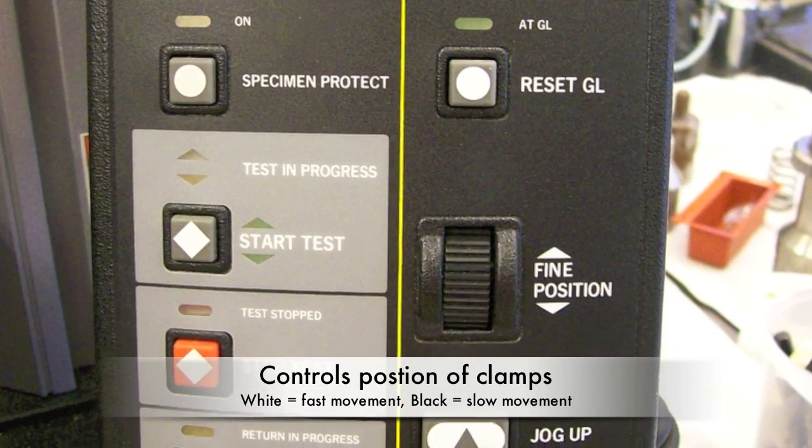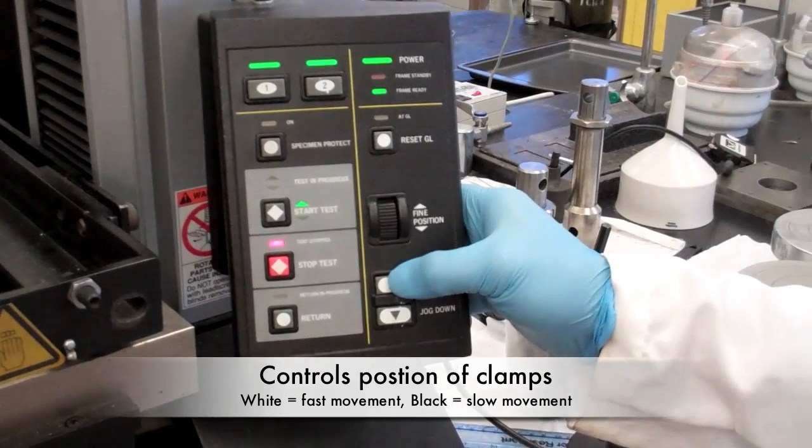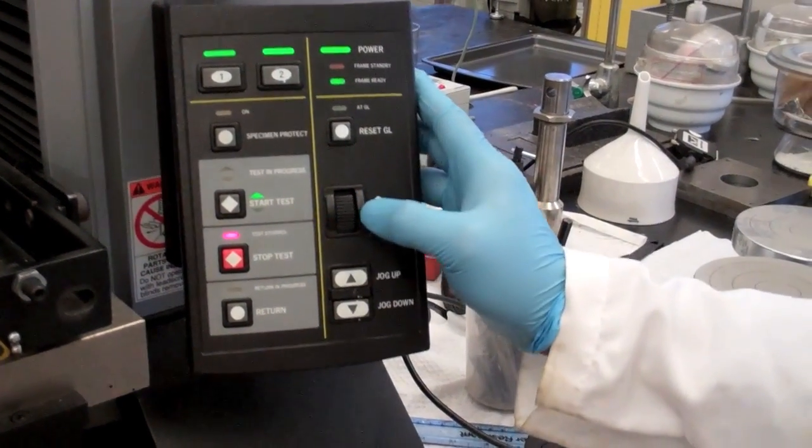The remote controller is used to position the clamps and to operate the machine. The white buttons are fast movement and the black scroll is slow movement of the clamps.